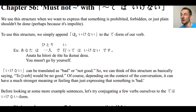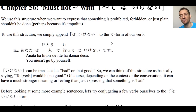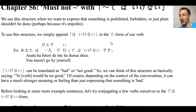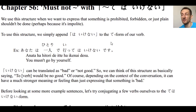All we have to do is append wa ikenai to the te-form of our type 1, type 2, or type 3 verb. So as long as you know how to conjugate a verb to the te-form, it should be no problem. If you need to review, be sure to check out my video on that, but I'm assuming you're already familiar with it.